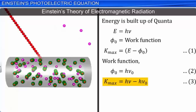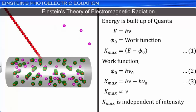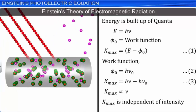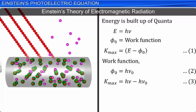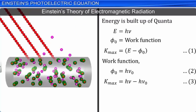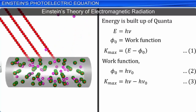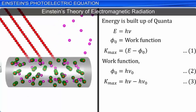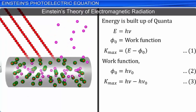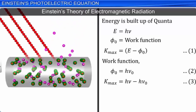This shows that the maximum kinetic energy of the ejected electrons is proportional to the frequency ν of the incident radiation, since hν₀ is constant for a metal surface. From this, we also observe that the maximum kinetic energy of the ejected electrons is independent of the intensity of the incident radiation. As the intensity of the incident radiation increases, the number of photons incident per second on the metal increases, thereby causing an increase in the number of electrons ejected per second, and hence increasing the photoelectric current.